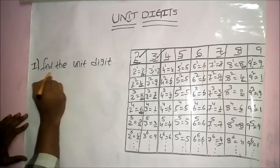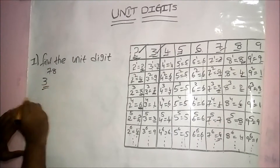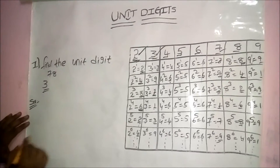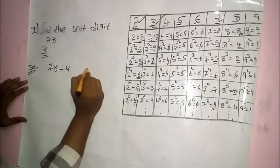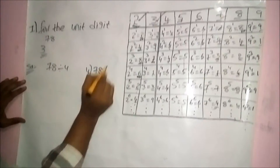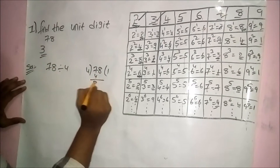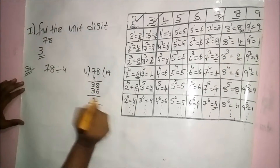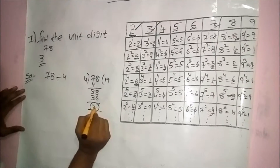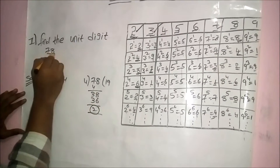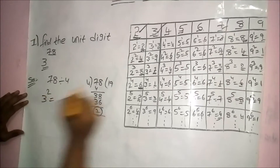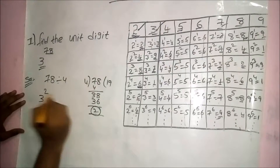Now problems based on 3. Find the unit digit of 3 power 7. Divide 7 by 4: reminder is 3. Replace the power with the reminder: 3 power 3 — according to table, unit digit is 7.